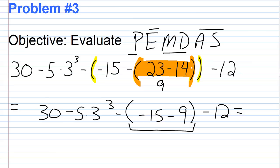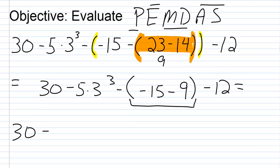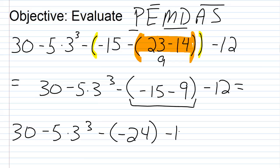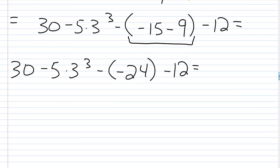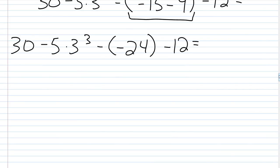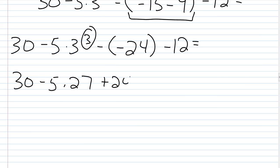Negative 15 minus 9 is negative 24. The expression is now: 30 minus 5 times 3 cubed minus negative 24, which is plus 24, minus 12. No more parentheses, so next we handle the exponent: 3 cubed is 3×3=9, times 3 again = 27. Expression becomes: 30 minus 5 times 27 plus 24 minus 12.